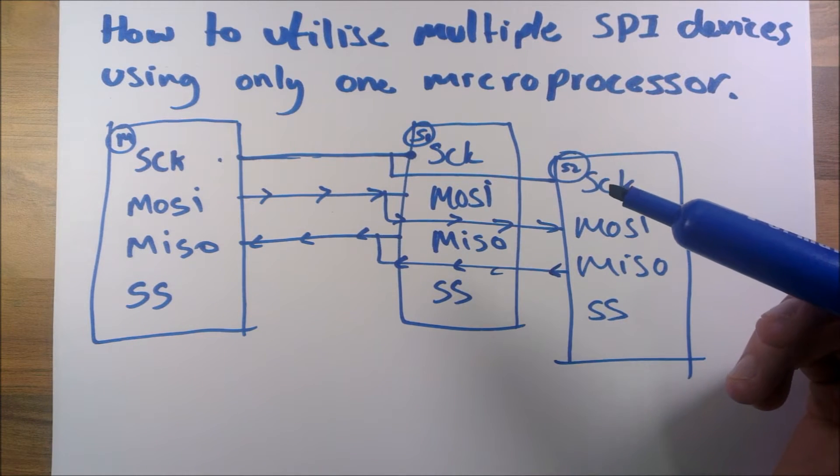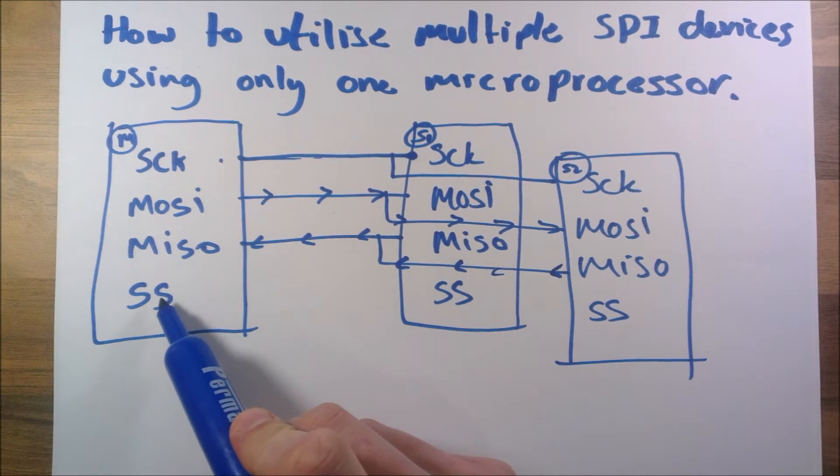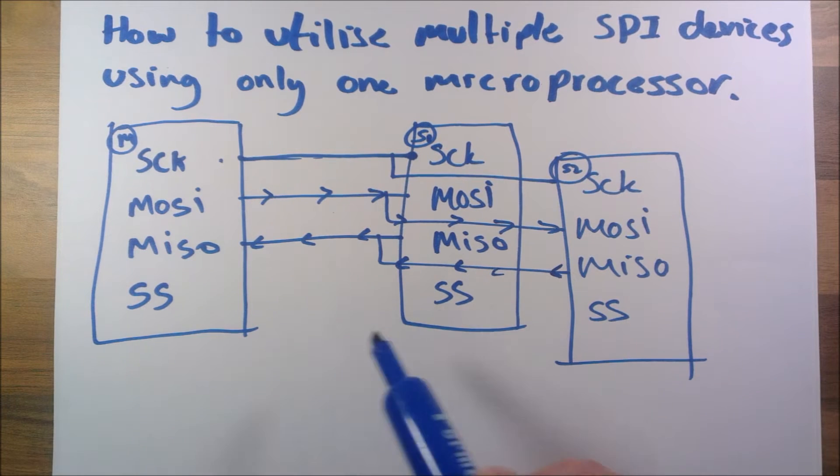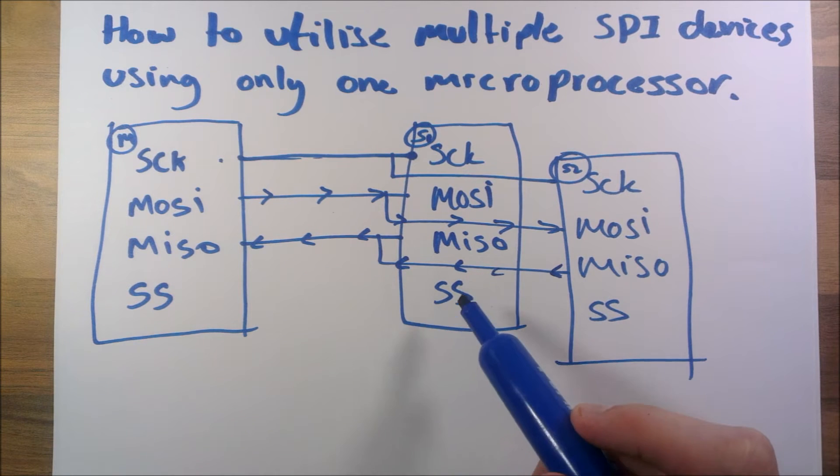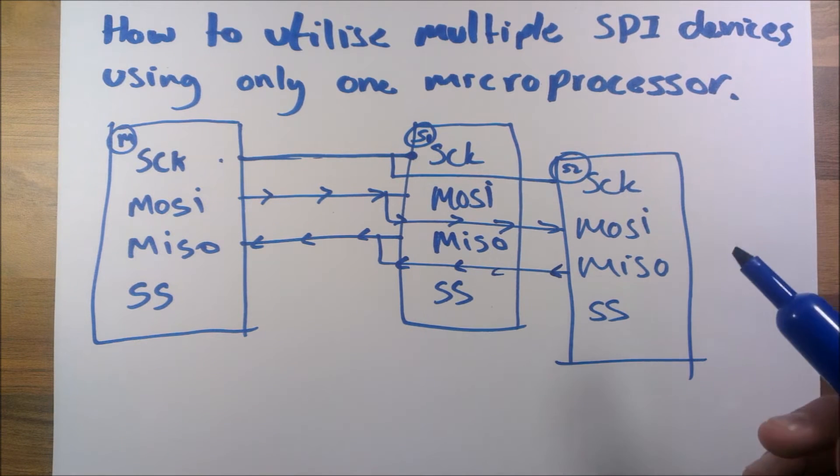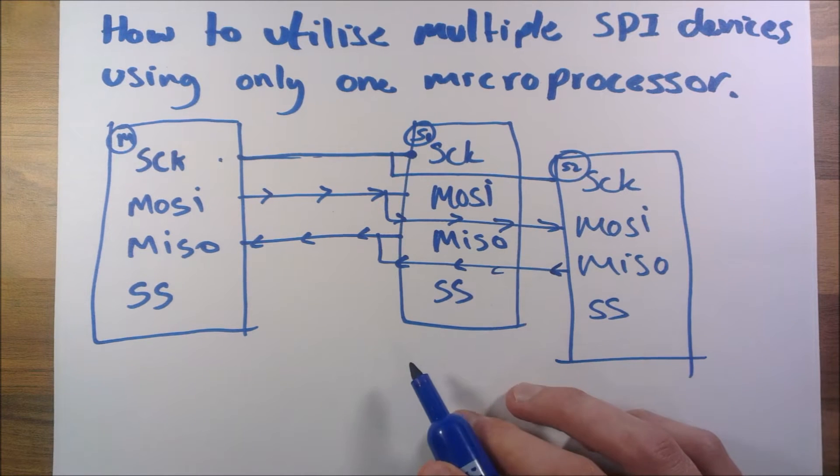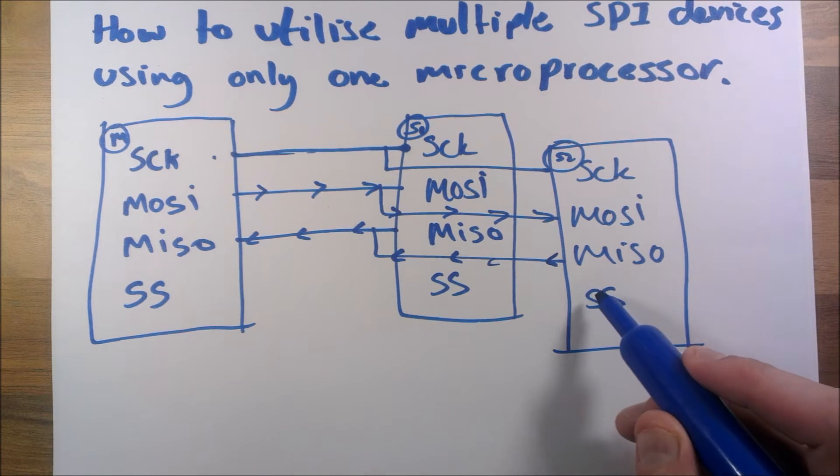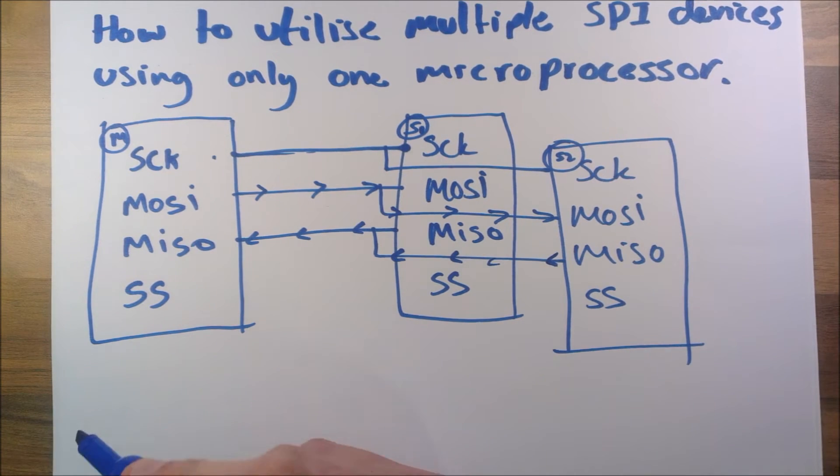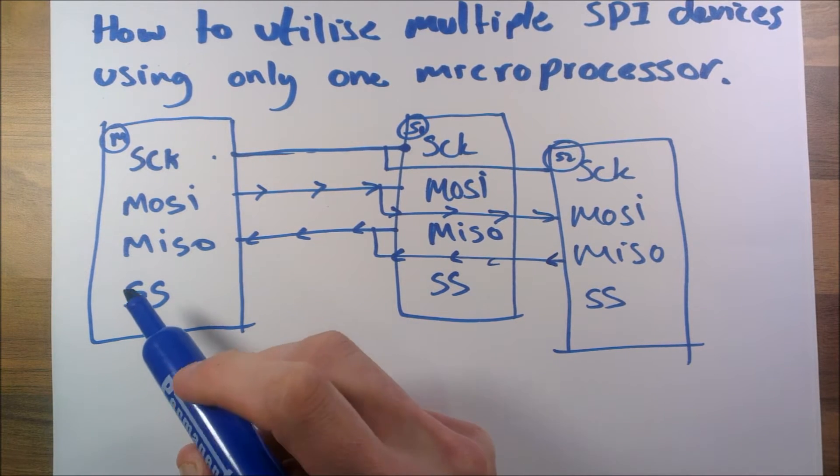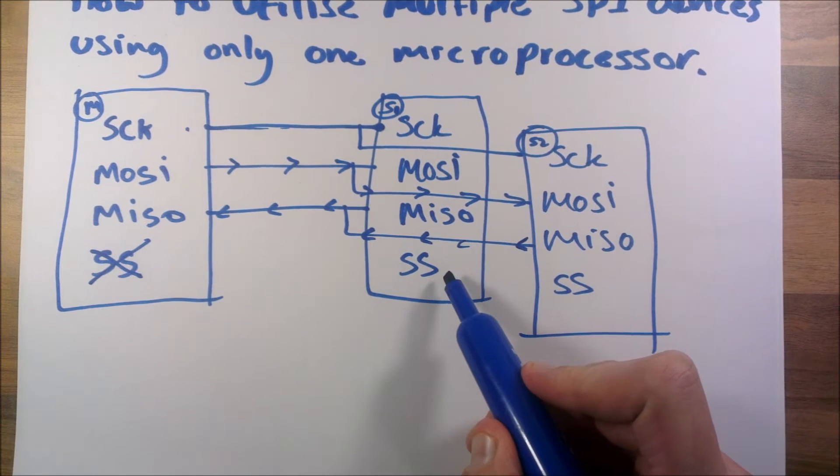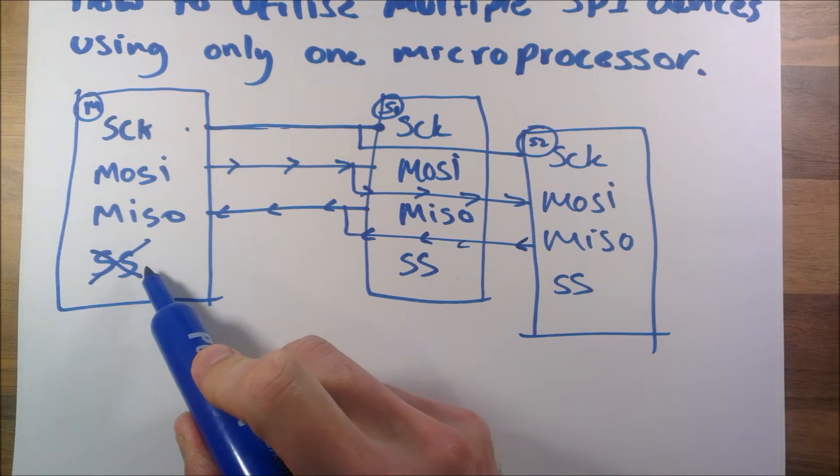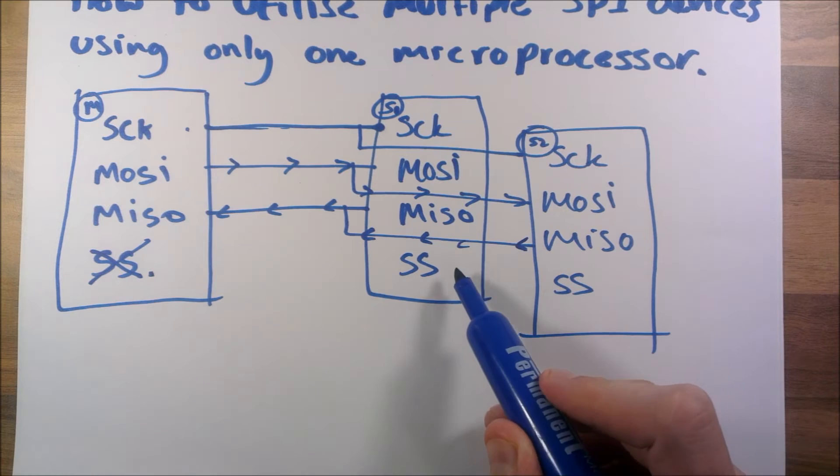The way it does this is by means of SS - slave select. Sometimes they're called other things like chip select, but I'm going to call it SS. On the master it's not a slave so we're not going to use it, but on these two slaves we do need to use the slave select.